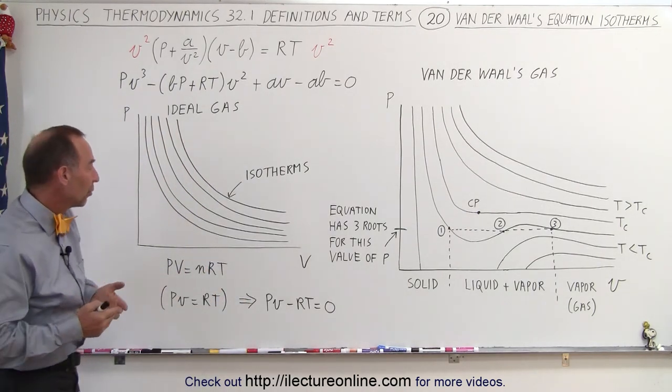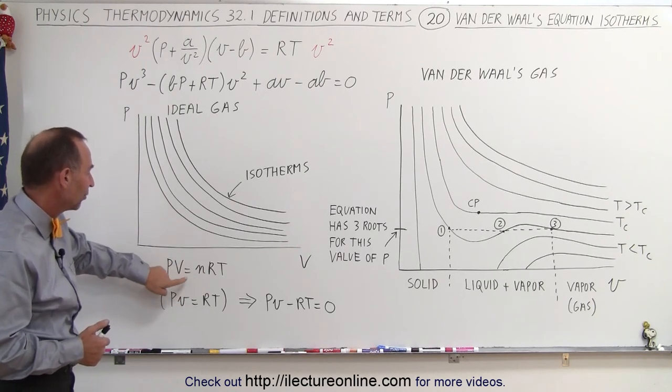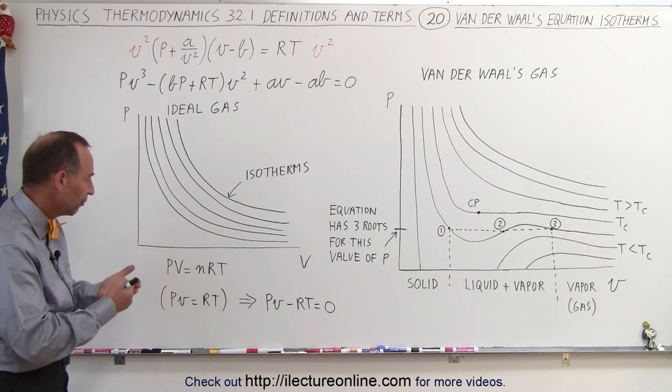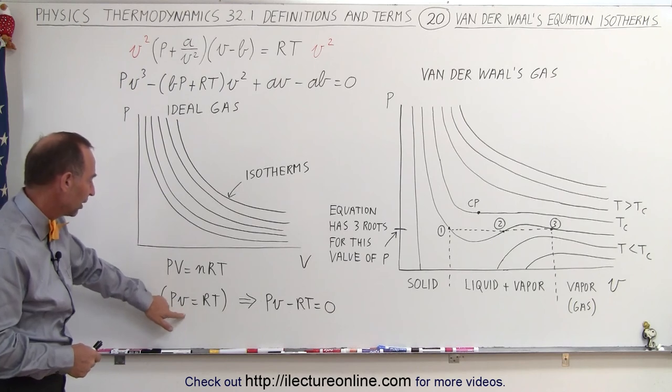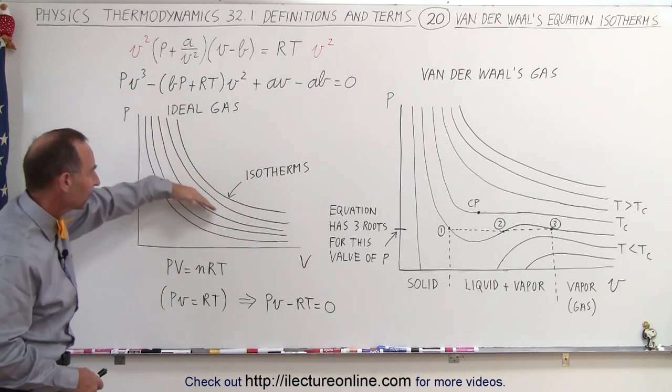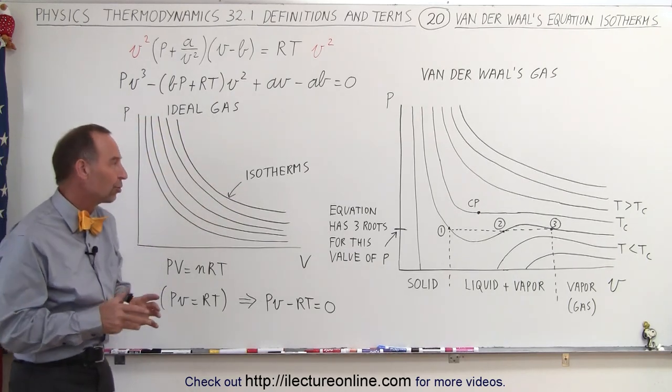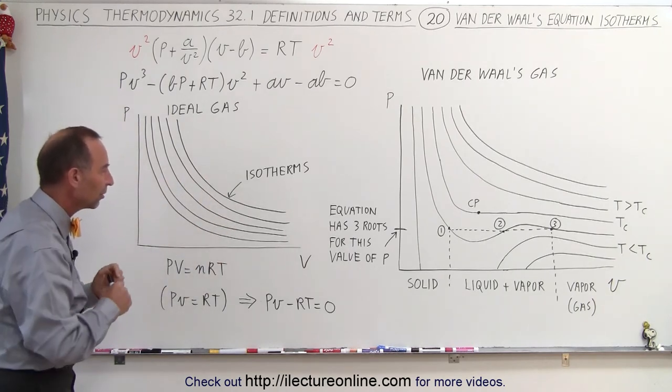Now in the ideal equation where we have pv equals nRT, or if we write v as big V over n, the volume per number of moles, then we can see that there is an inverse relationship between p and v and we have the 1 over x kind of lines for the isotherms, for the lines that represent constant temperature in a pv diagram. And so most of us are very familiar with this.